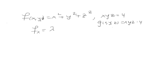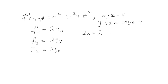We set the partial derivatives of f equal to lambda times the partial derivatives of g. Taking the derivative with respect to x gives 2x = lambda · yz. With respect to y gives 2y = lambda · xz. And with respect to z gives 2z = lambda · xy.